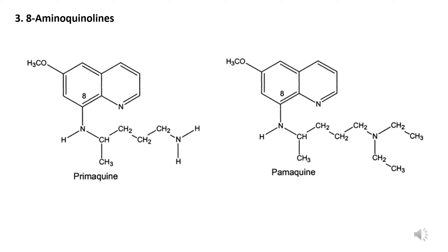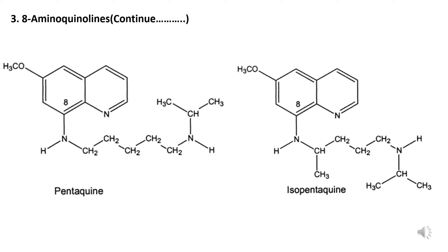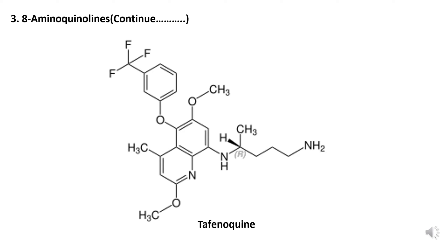The next category is 8-aminoquinoline derivatives. Examples are primaquine and palmaquine. Pentaquine and isopentaquine are also examples of 8-aminoquinoline derivatives. Tafenoquine is also an example of 8-aminoquinoline. You can see their structures on screen.